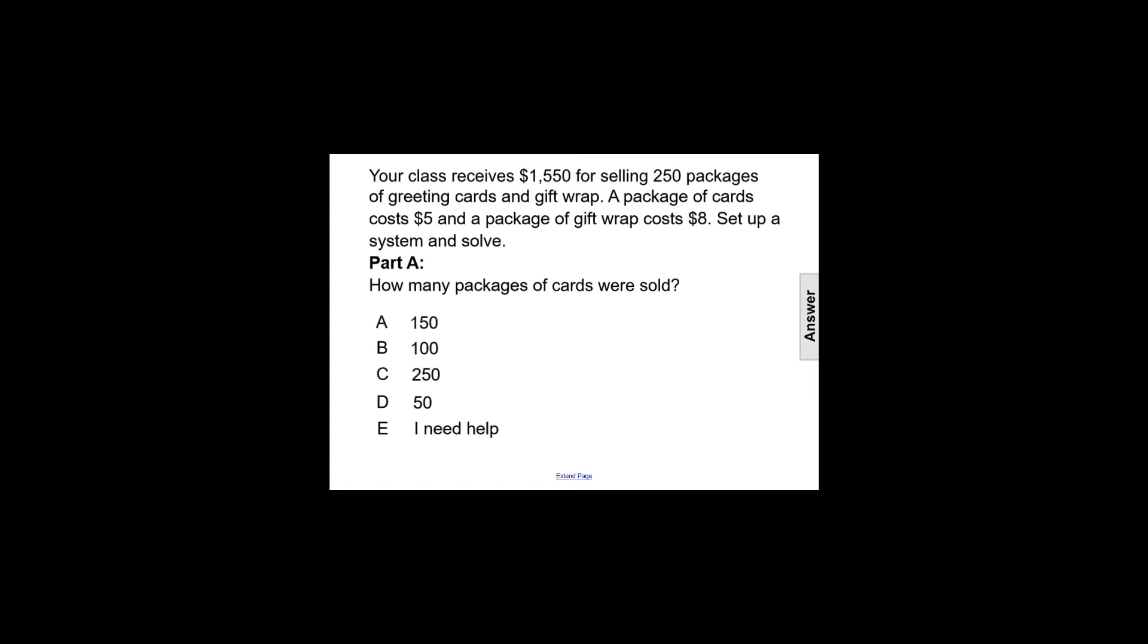So to answer that question, first let's define variables where one of them is going to be the number of packages of cards that were sold. So let's let C equal the amount of packages of cards sold, and we'll let G equal the amount of gift wrap that's sold. So we have our two variables. We got that from the question, how many packages of cards were sold, and we're also selling packages of gift wrap. So now we have to set up a system we can solve to answer and find the value of C and G.